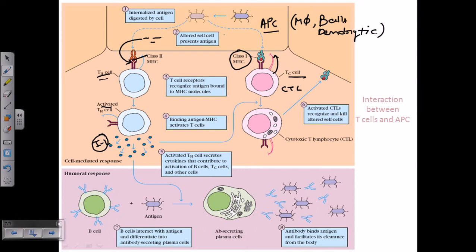The CTL recognizes the cell via MHC class 1 and receives the signal that the cell is not healthy. The CTL then releases enzymes like perforins and granzymes that degrade this particular cell so that the infection cannot spread to other cells. This is the response called upon by the T helper cell, and it is called the cellular mode of response.